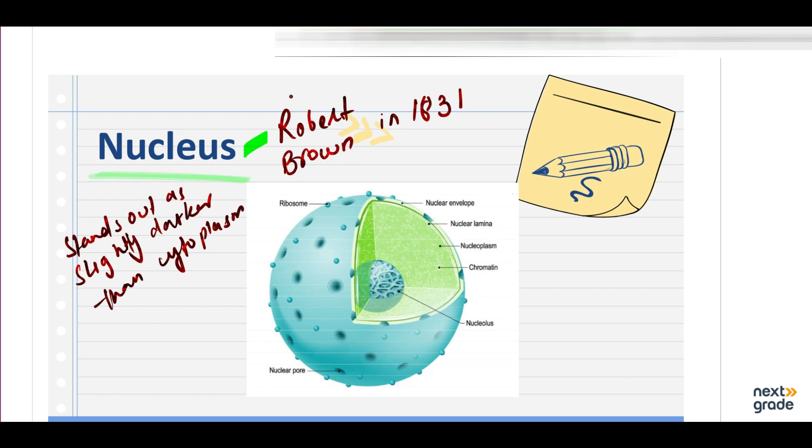The nucleus was discovered early because it was a prominent structure, because it was dark as compared to the surrounding cytoplasm. It controls life and activities of the cell.